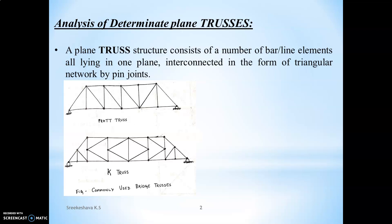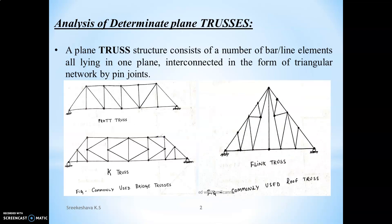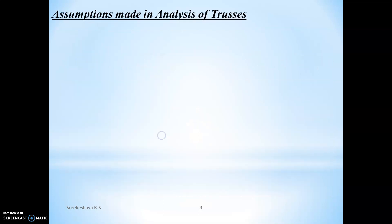These are different examples of commonly used trusses: strand truss and K-truss in the case of bridges, and Fink truss in the case of roof trusses. These are some basic examples of plane trusses.